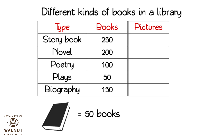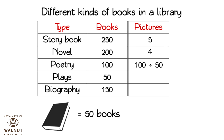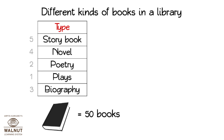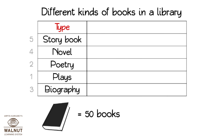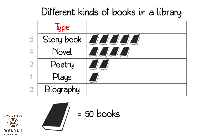Let us decide how many pictures we need to draw for each. We know we have to divide each entry by 50. We do that for each entry and get the number of pictures. We lightly write the number of pictures that we need on the left side. We are now ready to put the pictures in and make it a proper pictograph. We make space for the images, then go on putting the images for each book. After it's done, we erase the numbers we had written to the left and the pictograph is ready.